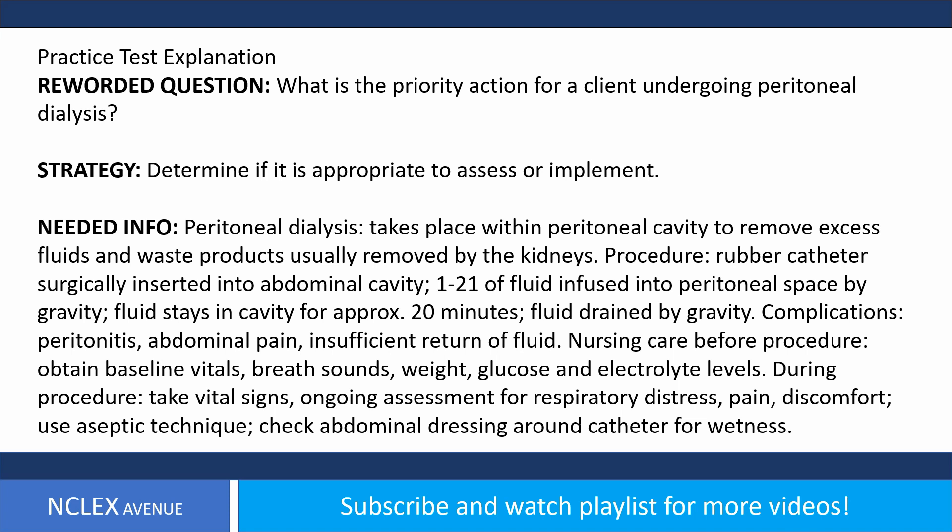Peritoneal dialysis takes place within the peritoneal cavity to remove excess fluids and waste products usually removed by the kidneys. Procedure: A rubber catheter is surgically inserted into the abdominal cavity. 1-2L of fluid is infused into the peritoneal space by gravity, fluid stays in the cavity for approximately 20 minutes, then fluid is drained by gravity.